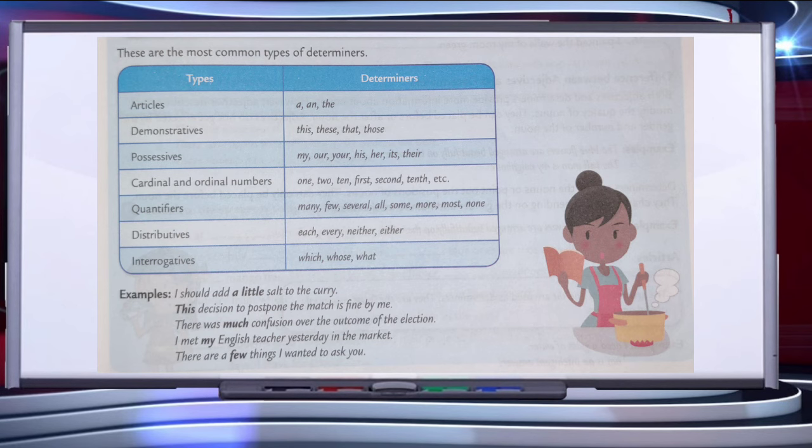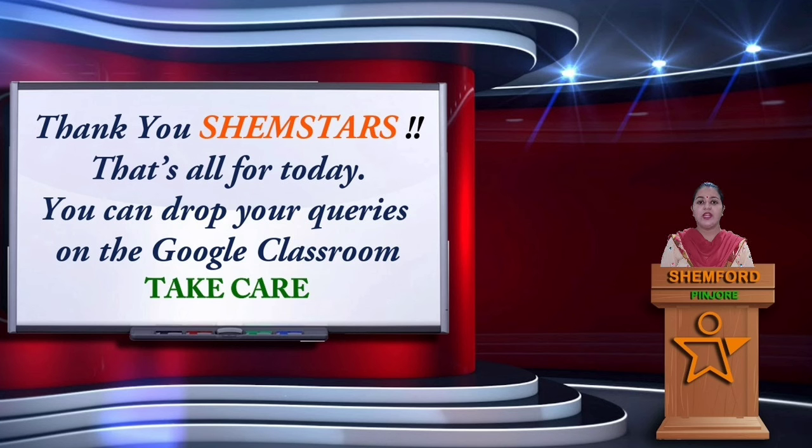So, these are the different types of determiners: articles, demonstratives, possessives, cardinal and ordinal numbers, quantifiers, distributives and interrogatives. We will discuss about them in the upcoming videos. If you have any doubt, you can drop on Google class. Take care all of you. Thank you.